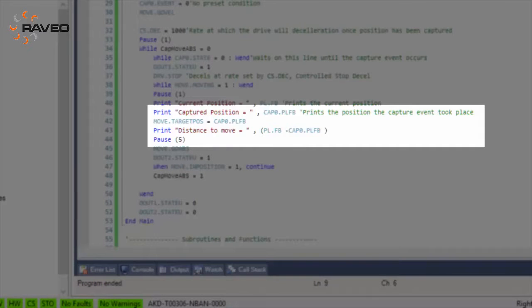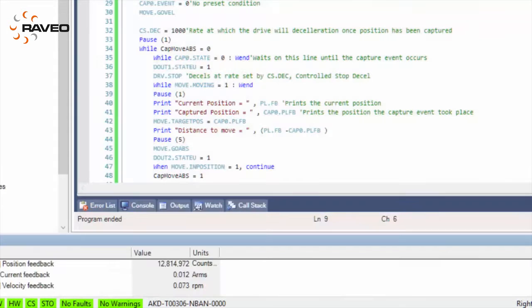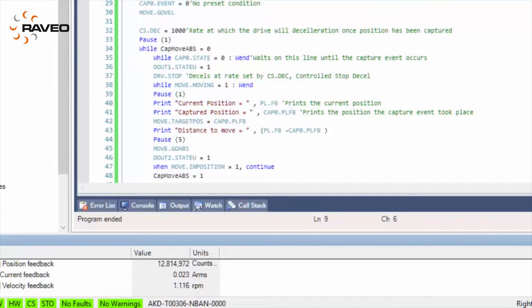The distance traveled during deceleration can be calculated by subtracting the captured position from the current position. To move back to the captured position, we can make an absolute move.